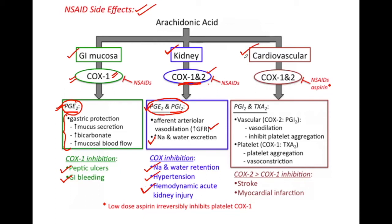Looking at the effects of COX inhibitors on the cardiovascular system, let's first see the actions of prostaglandins — prostacyclin and thromboxane A2 — on the vascular system. Prostacyclin causes vasodilation and inhibits platelet aggregation.